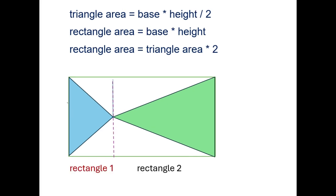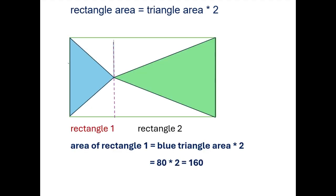I drew a dash line to get a rectangle area whose base and height are same as the blue triangle. We know the area of blue triangle is 80 square inches. Then the area of rectangle 1 becomes 160 square inches.